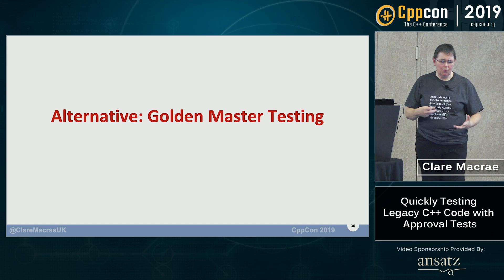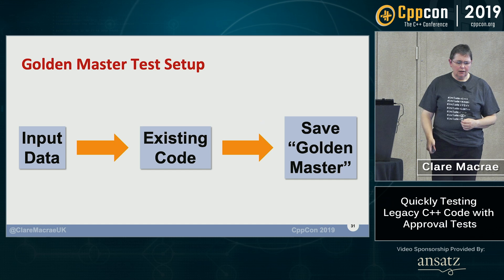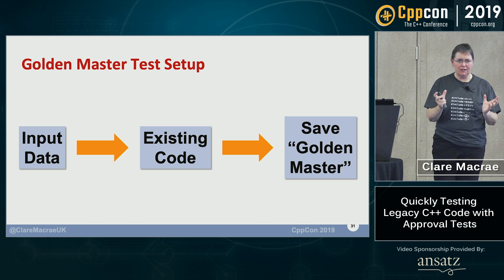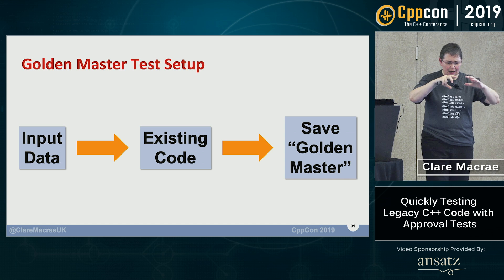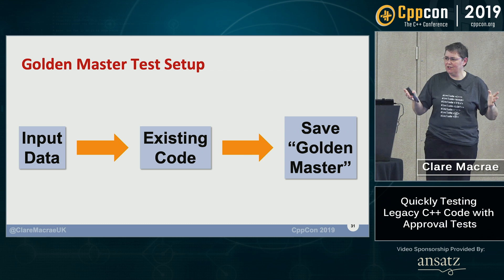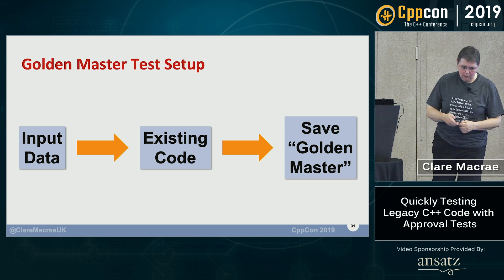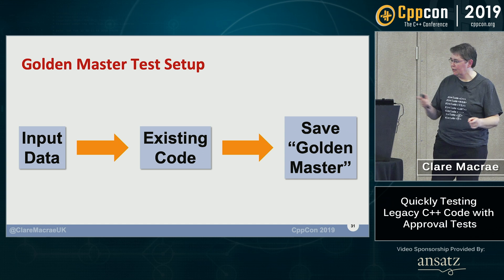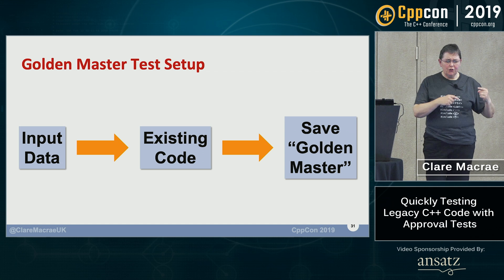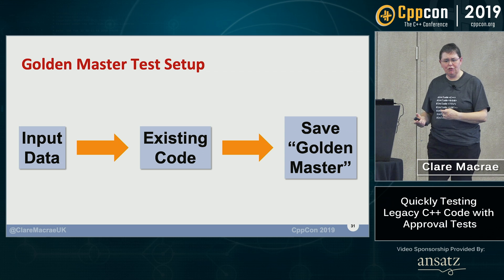There's another approach called golden master testing. You take your existing code and make the smallest possible changes to call some core bits of the system — bits you can't break down — finding a seam. Maybe you're lucky and it's a console application you don't have to change at all. You pass some input in and save some output. Assuming you can pull together some input data and feed it into your program, you capture some output — some representation — that becomes your golden master.